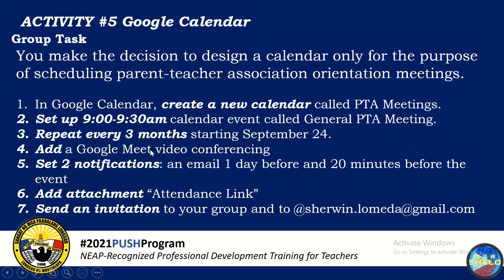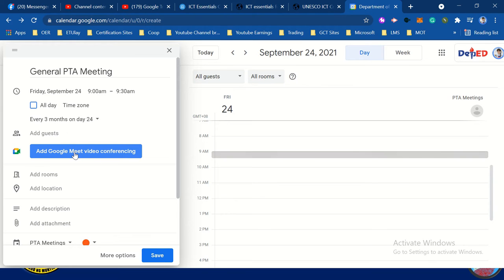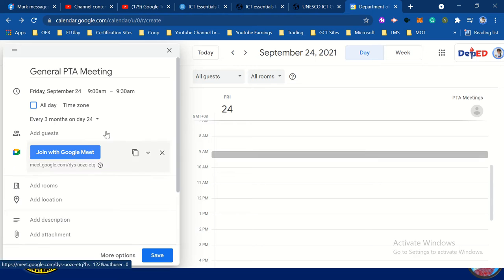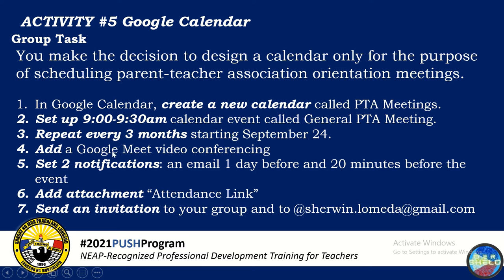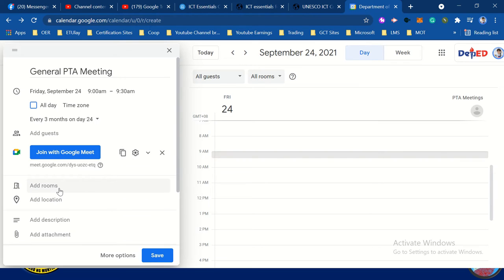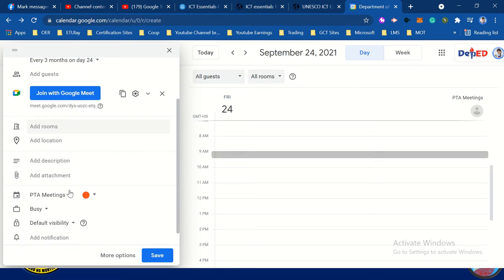Next is adding Google Meet video conferencing — just click 'Add Google Meet'. That's it. Next, set the notification: email one day before and 20 minutes before the event.